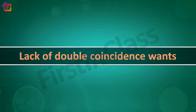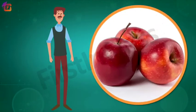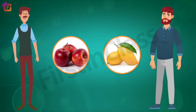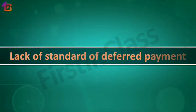The first limitation is lack of double coincidence of wants, which means this system can work only in a situation when both buyer and seller are ready to exchange each other's goods. For example, Mr. X wants to exchange his apples with mangoes of Mr. Y, but this is possible only when Mr. Y also wants to exchange his mangoes with apples of Mr. X. The transaction will only complete when the condition of double coincidence is fulfilled.